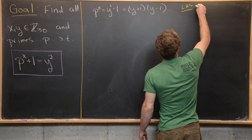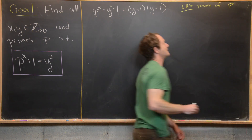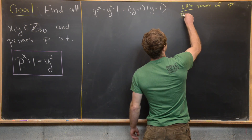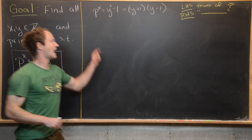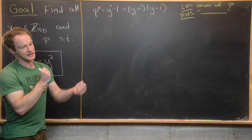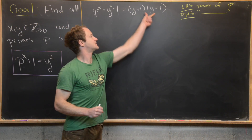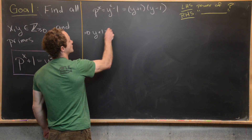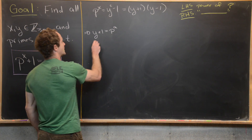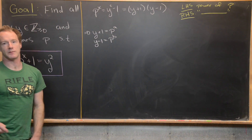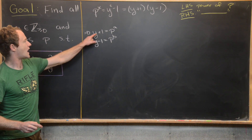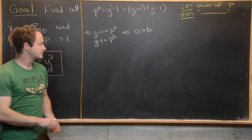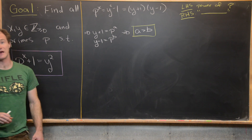Now we want to make the following obvious but very important observation: the left-hand side is a power of a prime p. If the left-hand side is a power of p, then also the right-hand side is a power of p. Since we have factored the right-hand side into two parts, each of these parts must be a power of this prime. So we have y plus one equals p to the a for some a, and y minus one equals p to the b for some b. And since y plus one is bigger than y minus one, that means a is bigger than b.